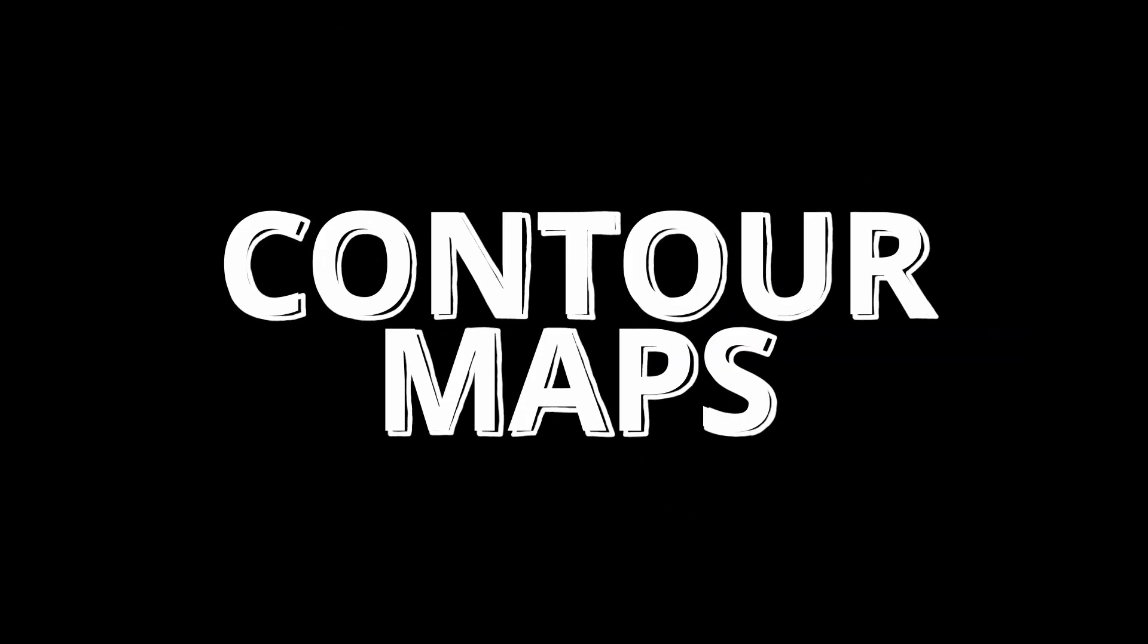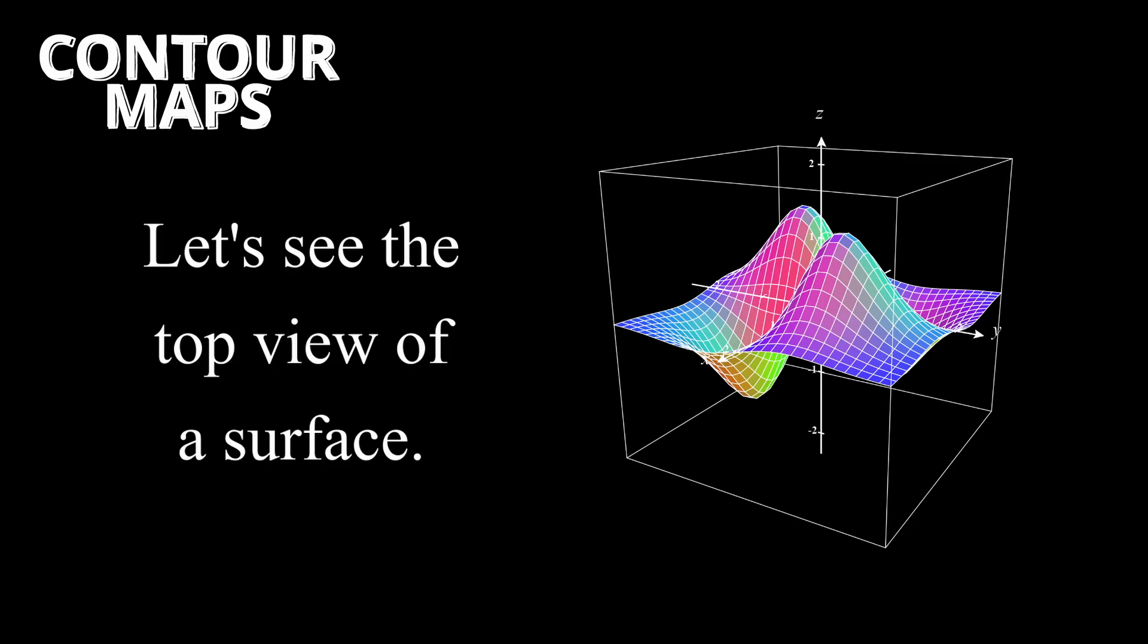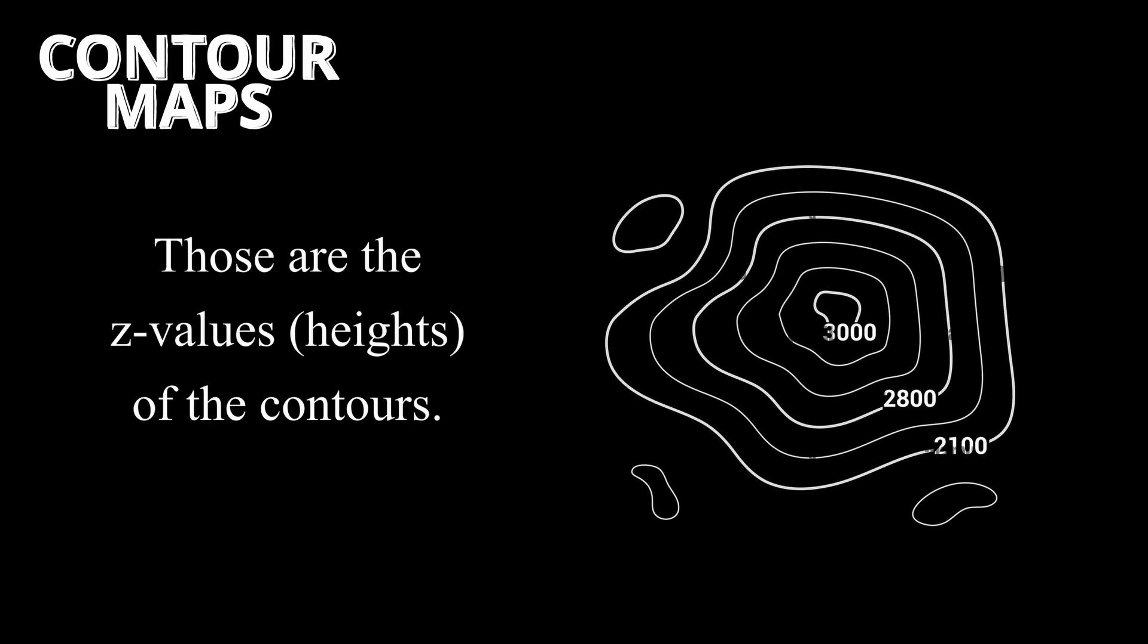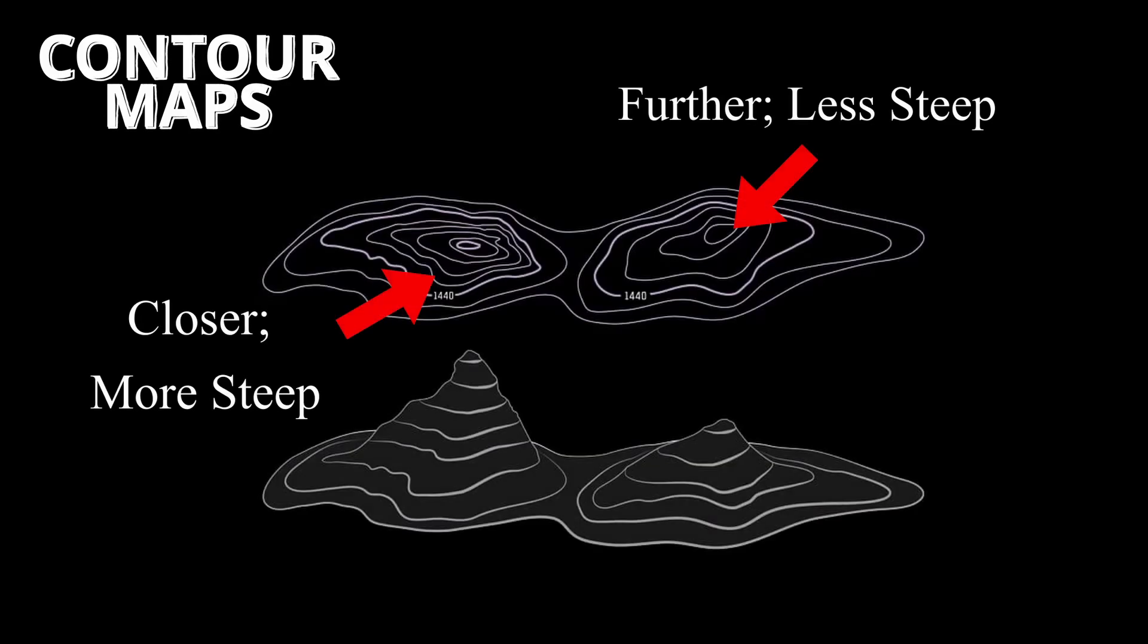Contour Maps. Another way to look at these surfaces is through contour maps. This is a top view of the surface and it gives information on the height, the z value, of our function at certain points. The contours are usually labeled with the z values corresponding to those points. It's also worth noting that the closer these contours are to each other, the steeper the slope is between them.